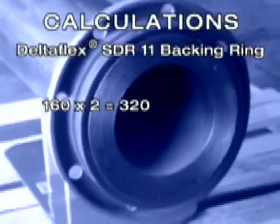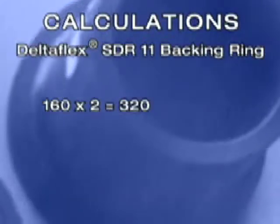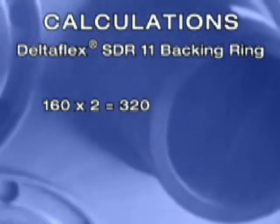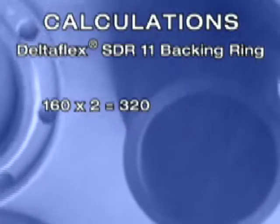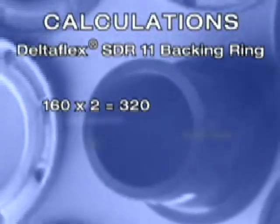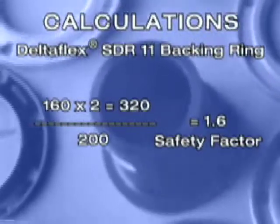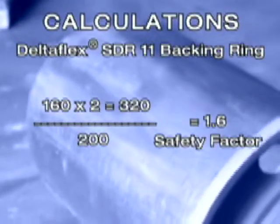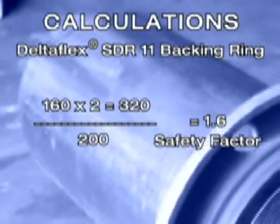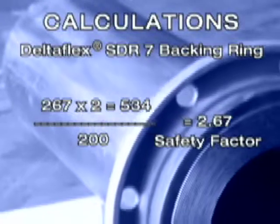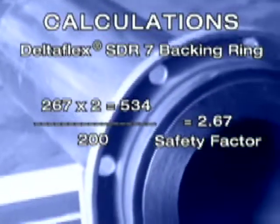The calculation for determining the safety factor is simple. Take the pressure rating of the backing ring, in this case 160 PSI, and multiply it by its safety factor of 2 which equals 320. Divide that by the operating pressure, or SDR, of the specified pipe, 200 PSI, yields a safety factor of 1.6. Using SDR 7 backing rings would yield an ample safety factor of 2.67.